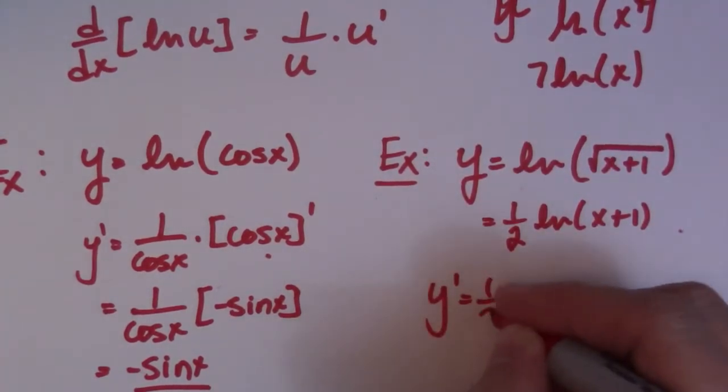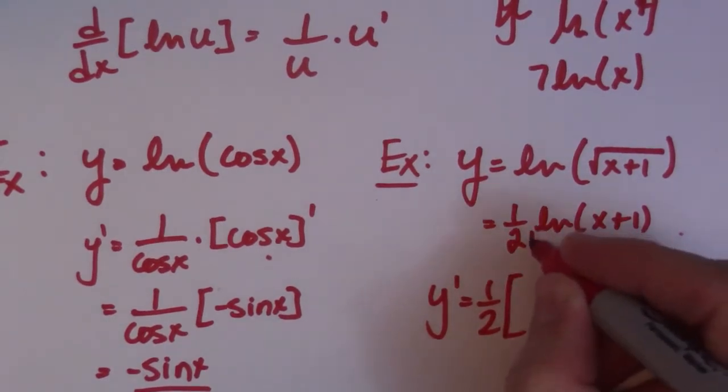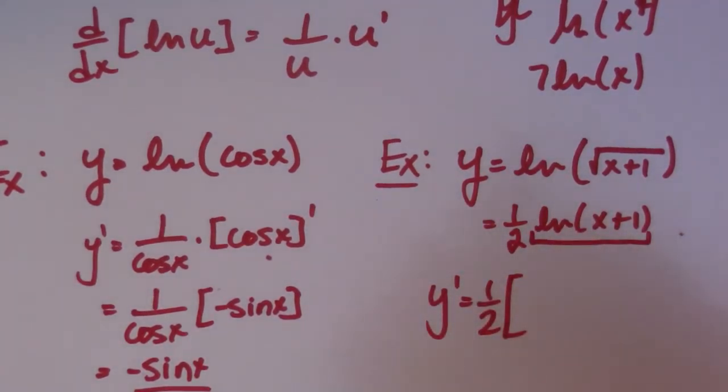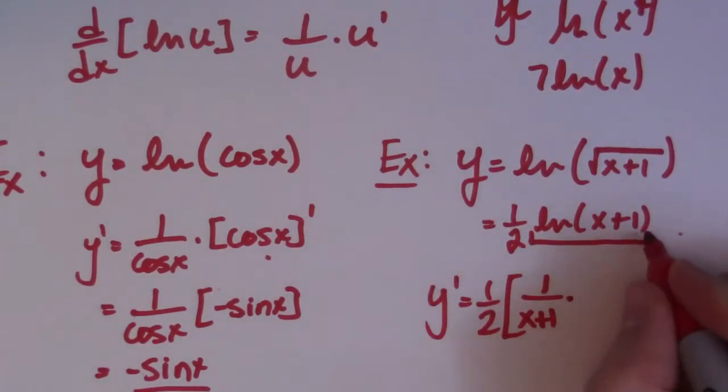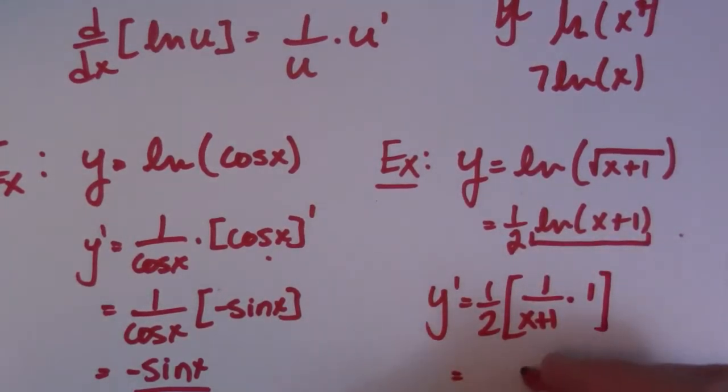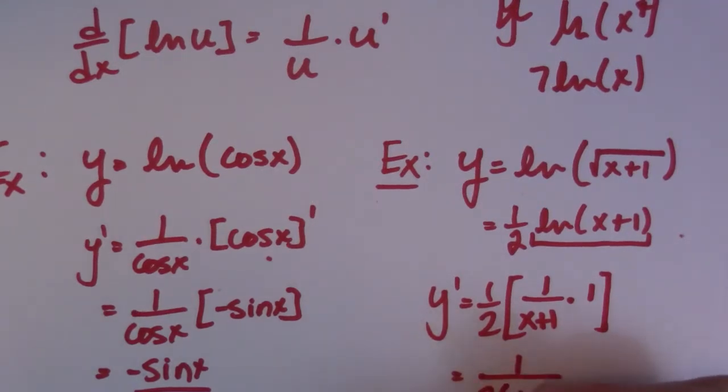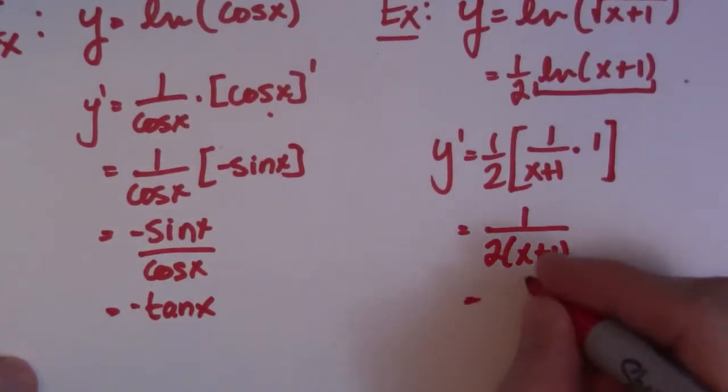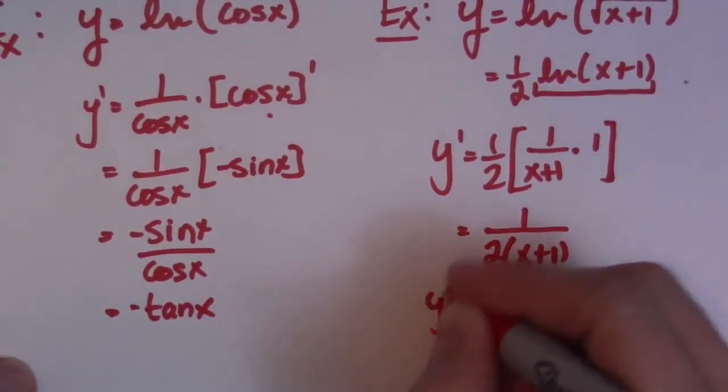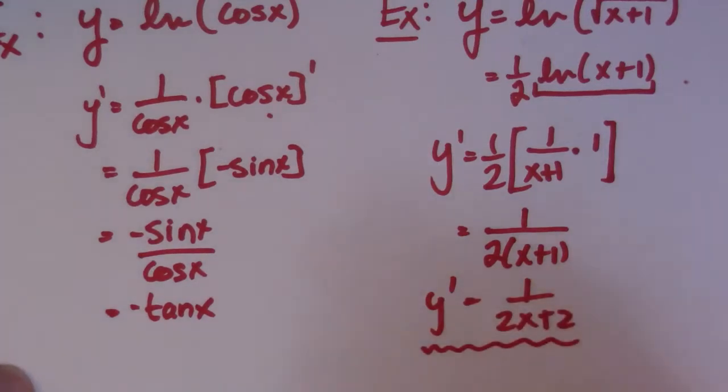So that one-half, we'll just leave it outside. And really, I'm only concentrating on taking the derivative of this. So derivative of ln of x plus 1, well, it's 1 over x plus 1, my u being x plus 1. Then the derivative of x plus 1 is just 1. So this is what I get, 1 over 2 times x plus 1. Now, if you want to simplify that, you can. You can call it 1 over 2x plus 2. And there she is. That's it.